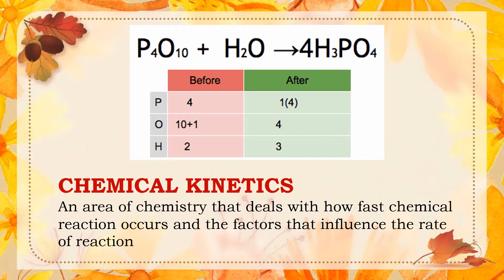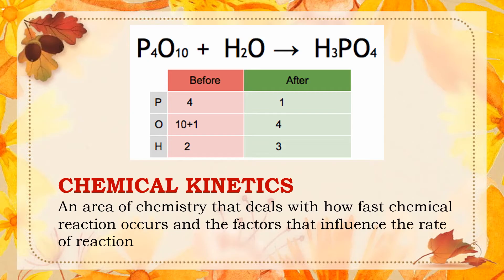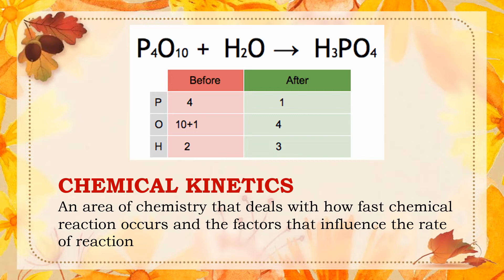Have you ever tried or experienced balancing chemical equations? In a balanced chemical equation, it shows chemical reactions which occur at different rates or speeds. However, chemical reactions do not show us how fast the reaction rate is in forming a product. In some cases, reactions happen very quickly such as burning of alcohol. Some reactions happen slowly like rusting of iron in damp air. An area of chemistry that deals with how fast a chemical reaction occurs and the factors that influence the rate of reaction is called chemical kinetics.